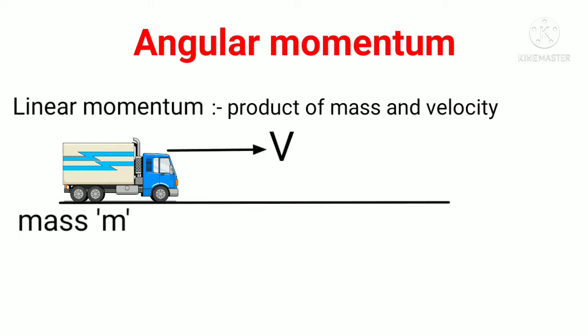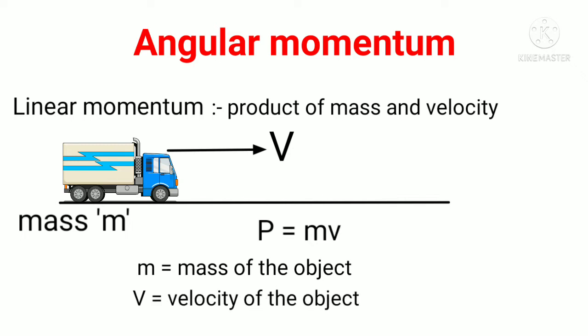In this case, the momentum of this object is p = mv, where m is the mass of the object and v is the velocity of the object.